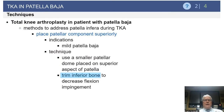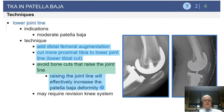Other ways to address Baja during total knee arthroplasty include placing the patellar button as superior as possible, which works well in cases of mild Baja. Often you will select a smaller patellar button so that the dome portion can be placed more superiorly. You can subsequently trim some of the inferior bone that is uncovered by the small, superiorly placed button to decrease flexion impingement.